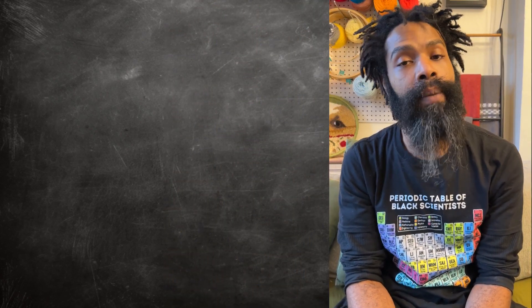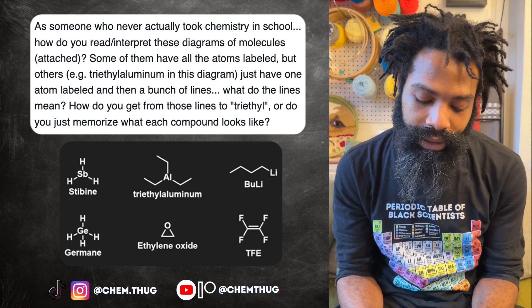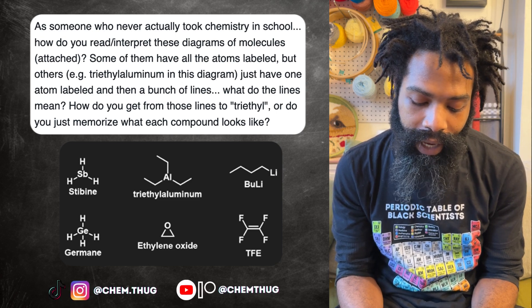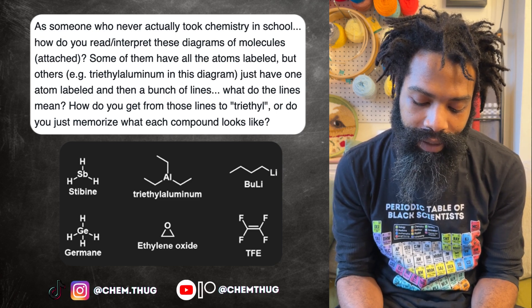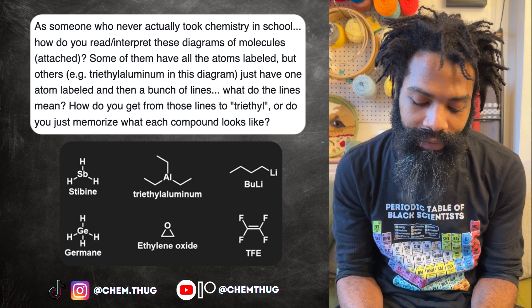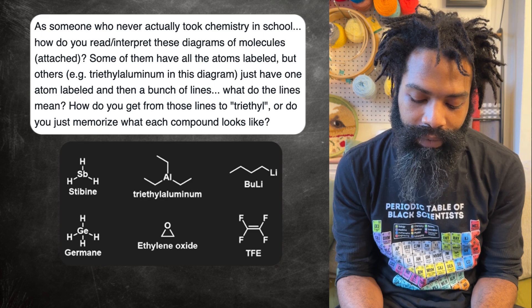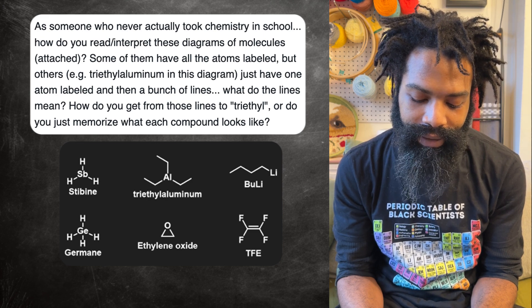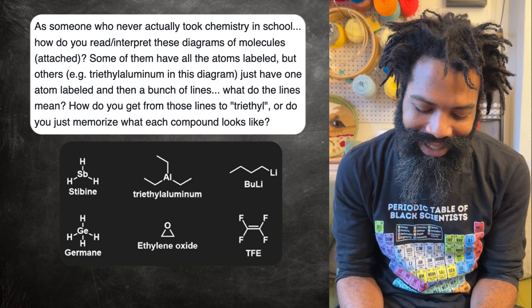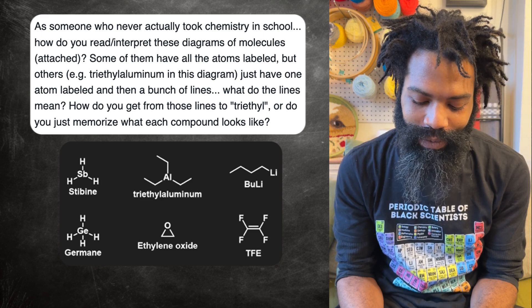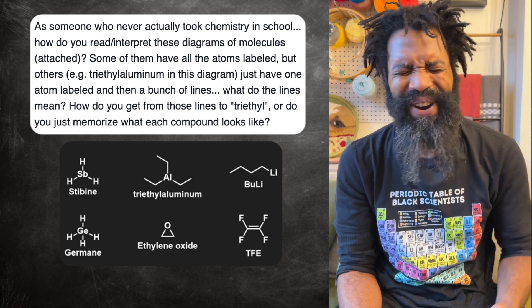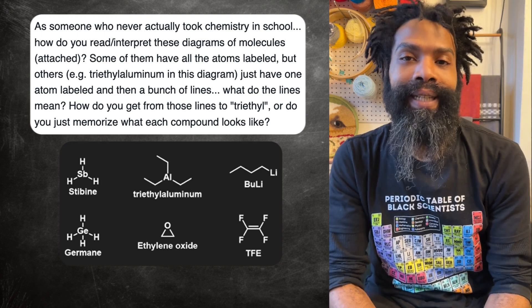What up y'all, Chem Thug, and today I have a question brought to you by one of my Ko-fi supporters, A Peace Bone. As someone who never actually took chemistry in school, how do you read and interpret these diagrams of molecules? Some of them have all the atoms labeled, but others like triethyl aluminum just have one atom labeled and then a bunch of lines. What do the lines mean? How do you get from those lines to triethyl?